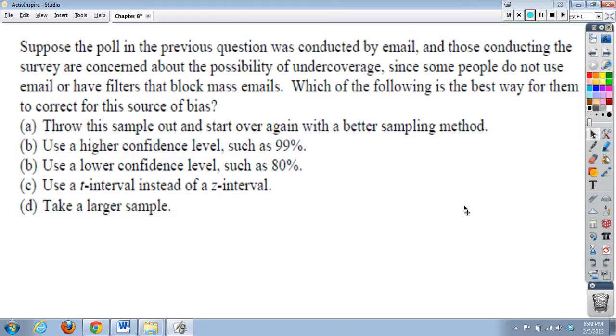Number four, suppose the poll in the previous question was conducted by email, and those conducting the survey were concerned about the possibility of undercoverage, since some people do not use email or have filters that block mass emails. Which of the following is the best way for them to correct for this source of bias? So, we are still talking about the previous example with the congressional term limits. So, if you want to pause, pause, otherwise we're going to keep going.